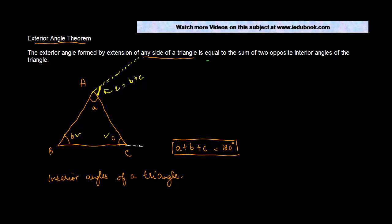Suppose instead of this, you would have extended this side. Let's call this angle as angle F. Then F is going to be equal to the sum of two opposite interior angles, which are A and B — you just leave the adjacent interior angle. Similarly, if you would have extended this side, let's call this angle as G. G will be equal to the sum of two opposite interior angles, which is A plus C.